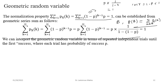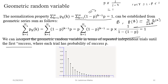In summary, the geometric random variable counts the number of repeated independent trials until the first success, where each trial has probability of success p. The PMF decreases geometrically, like a bouncing ball dying down. Visualizing it as a bar plot shows a geometric decline from k = 1 onward.